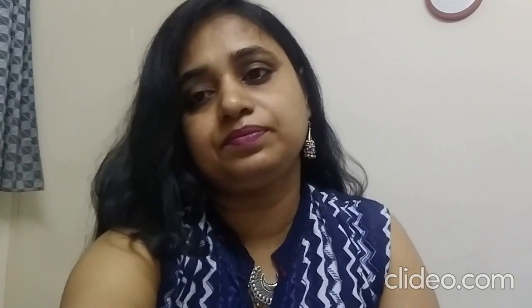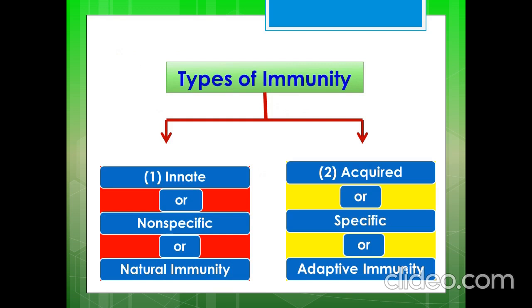When an antigen enters our body, a chain of immune reactions happens. Let us know what the different types of immunity are. Immunity is a Latin word 'immunis' that means free of burdens. Specifically for immunology, it means freedom from disease. Immunity is the ability of our body to protect against all types of foreign bodies or antigens like bacteria, virus, toxic substances, etc. which enter our body. There are two types of immunity: innate and acquired. Innate immunity is also known as non-specific or natural immunity, whereas acquired immunity is known as specific or adaptive immunity.